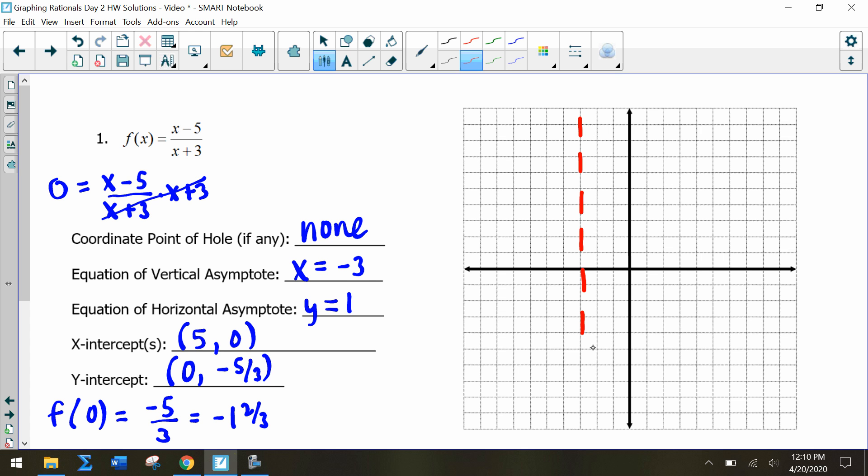We have an x-intercept at (5, 0), so one, two, three, four, five. And then our y-intercept is at (0, -1 and 2/3), so zero, negative one, and then 2/3 there.